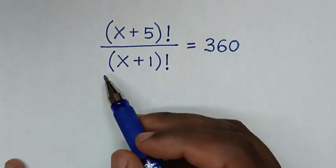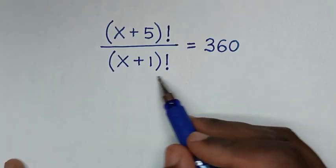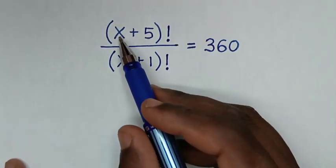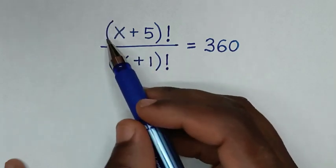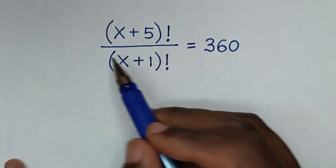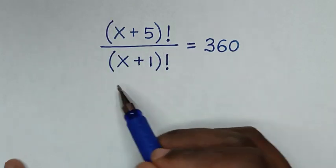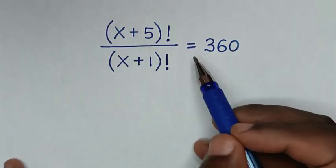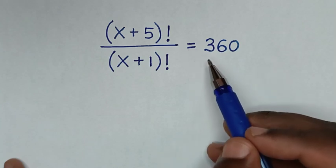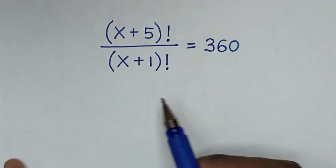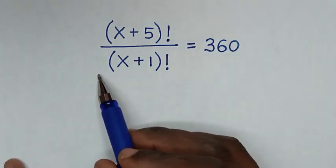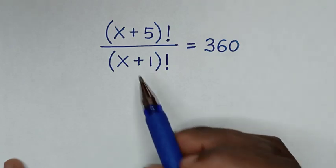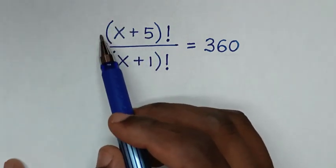Hello, you are welcome to solve this math problem which is (x+5)! over (x+1)! is equal to 360. We need to find the value of x from this equation.